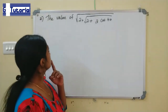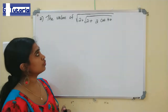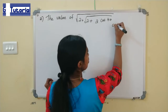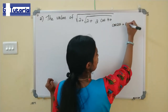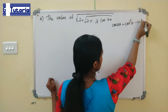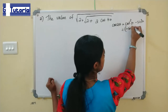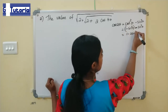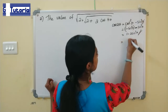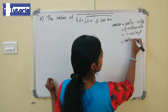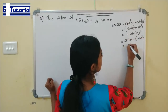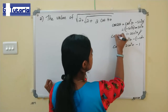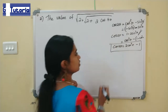Now the next question: find the value of √(2 + √(2 + 2cosθ)). In order to solve this, you should know the identity for cos 2θ. Cos 2θ = cos²θ - sin²θ, which equals 1 - 2sin²θ, or equivalently 2cos²θ - 1. So cos 2θ has three equivalent forms. Here we will use: cos 2θ = 2cos²θ - 1.